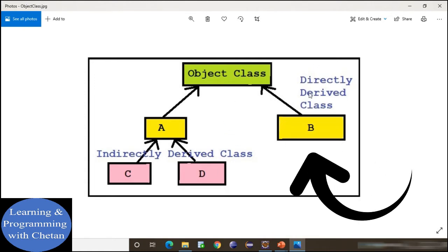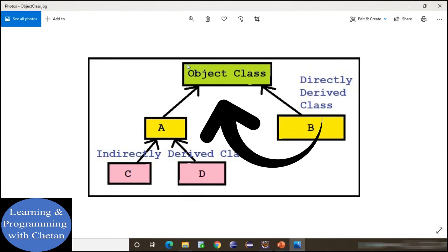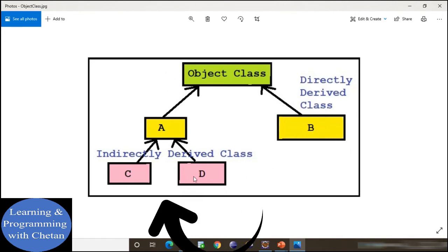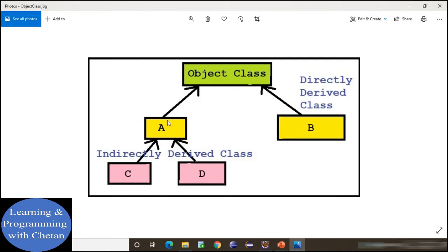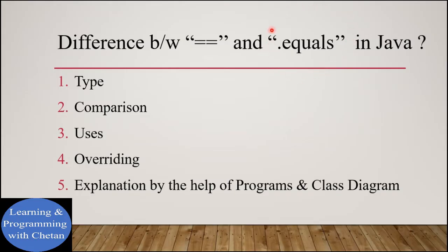In class B we can provide the implementation of our equals method for content comparison. If we are not overriding equals inside class B, it will by default use the equals method from the Object class. For class C and class D, if not overridden, it will look for equals in their immediate parent class A, and if not overridden there either, it will call the Object class equals method. The dot equals method is already overridden inside the String class, wrapper classes, and collection framework classes for content comparison.